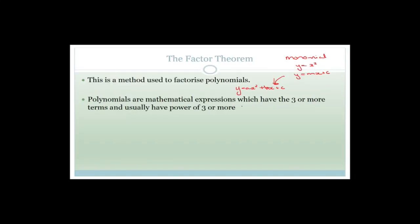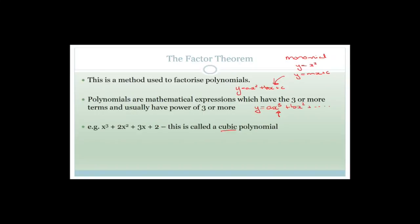Usually a polynomial has more than three terms, so it would be y = ax³ + bx² + ... and they usually have a power of three or more. An example is x³ + 2x² + 3x + 2, and it's called a cubic polynomial because the highest exponent is three.